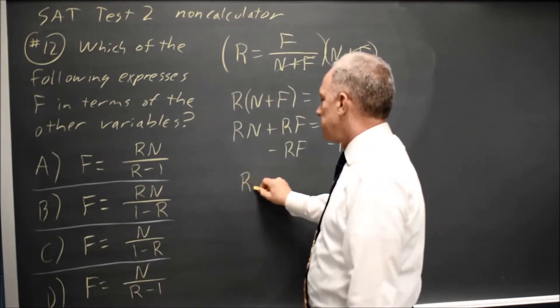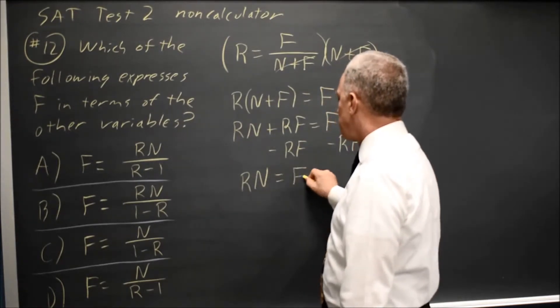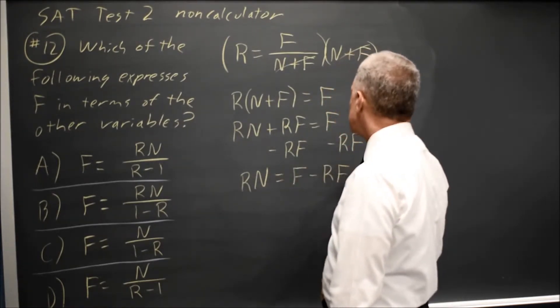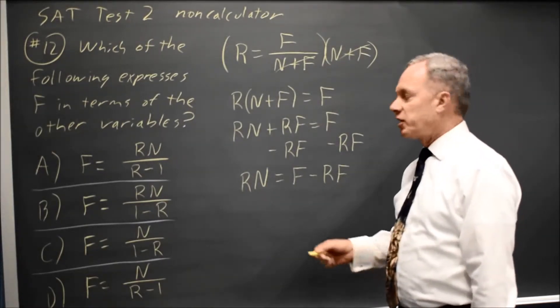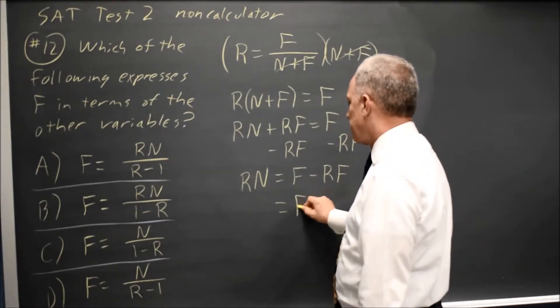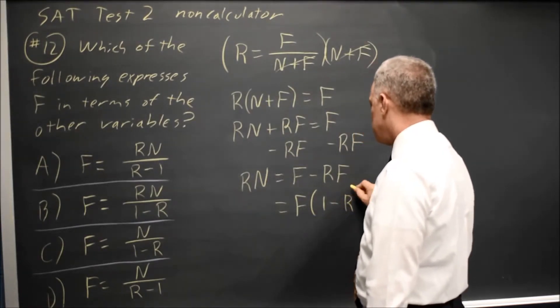That leaves me with just rn on the left equals f minus rf. Finally, all the f's are on the same side, and they're a common factor, so I can factor out f. I get f times 1 minus r on the right.